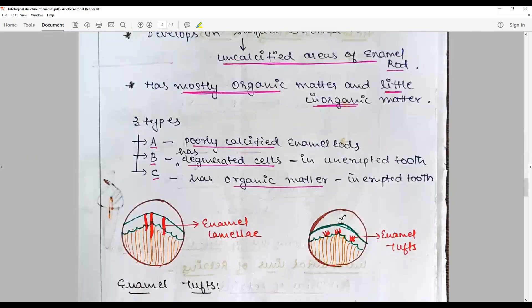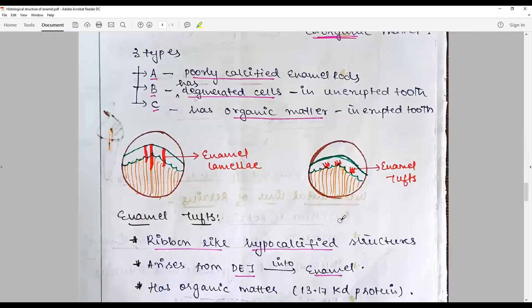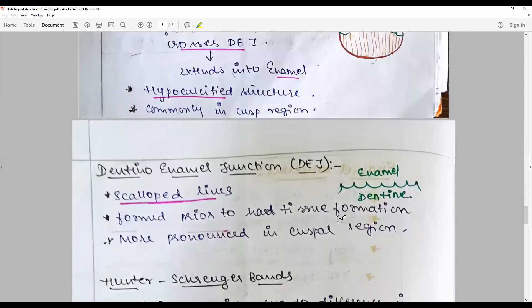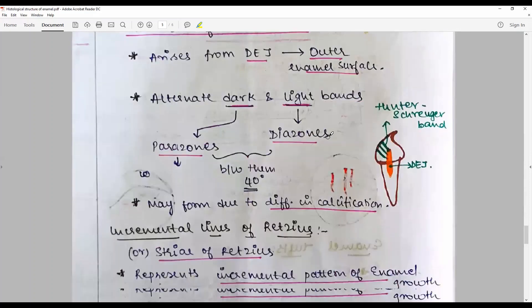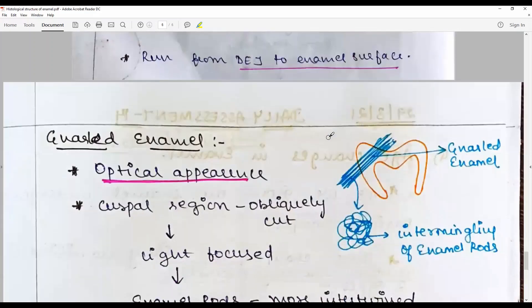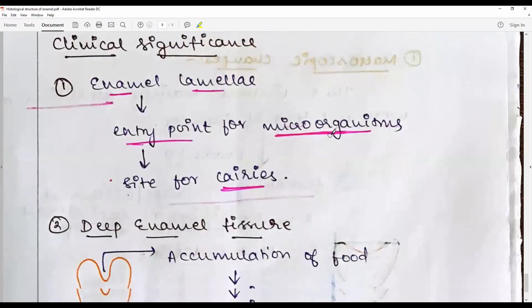Enamel lamellae, of course, serve as a nidus for caries formation. Dentino-enamel junctions - you prepare your cavity just in the dentin, just below your DEJ. The clinical significance, why you need to know about the DEJ - you don't prepare the cavity floor in the enamel, but in the dentin, just below your DEJ.